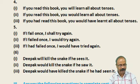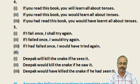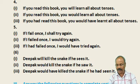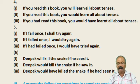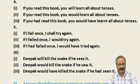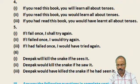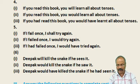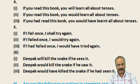Number 4: If I fail once, I shall try again. Second form: If I failed once, I would try again. Number 5: Deepak will kill the snake if he sees it. Second form: Deepak would kill the snake if he saw it. Third form: Deepak would have killed the snake if he had seen it.